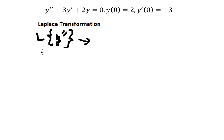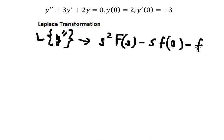We need to transform this one into s squared capital F of s minus s multiplied by f of zero, minus the first derivative f prime of zero. Now we go to the next one.